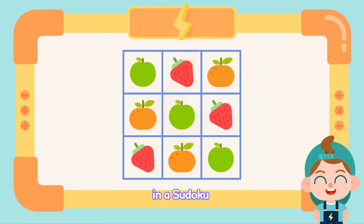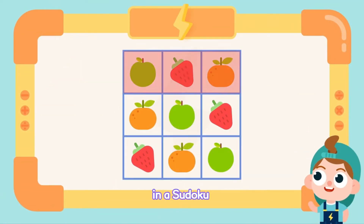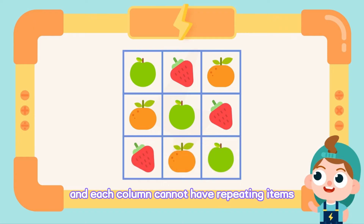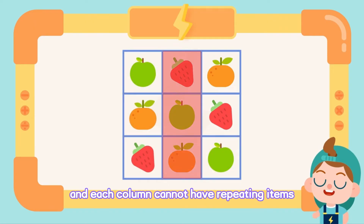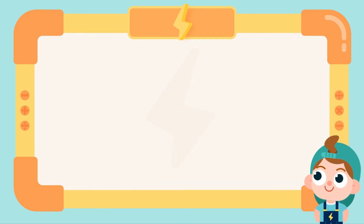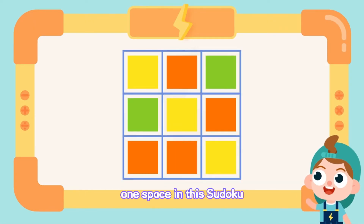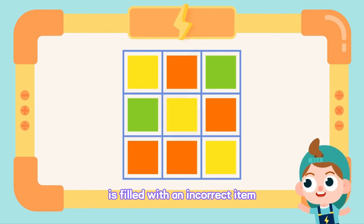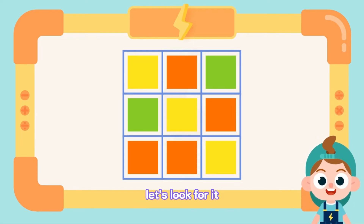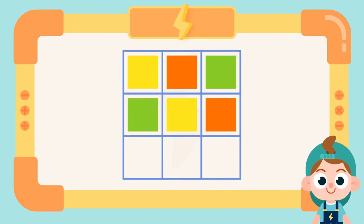In a Sudoku, each row and each column cannot have repeating items. One space in this Sudoku is filled with an incorrect item. Let's look for it.